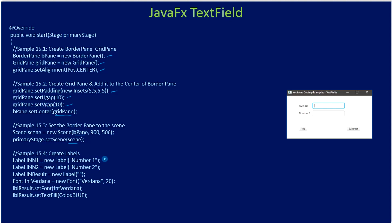The next step is creating labels. First we create two labels: number one and number two. Then we create one more label that you cannot see right now, which will appear at the result location. We set the font for this empty label — size 20, font family Verdana — and we set blue color for this label. We use this label to display the add and subtract result.